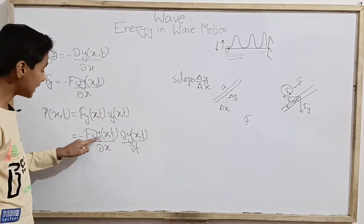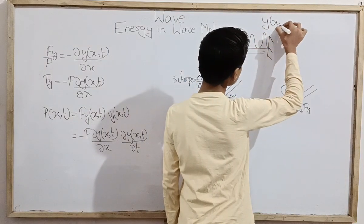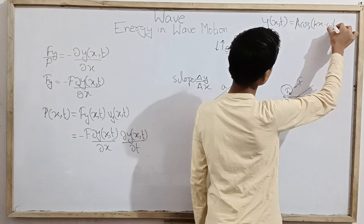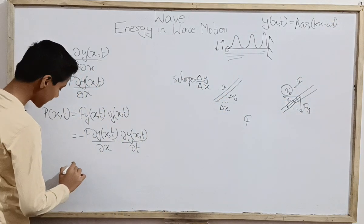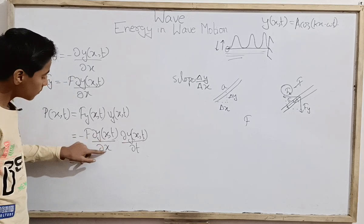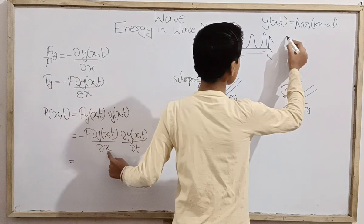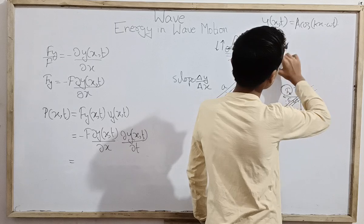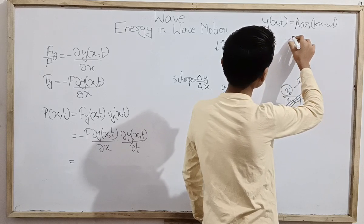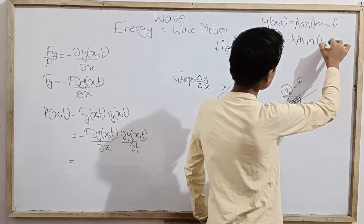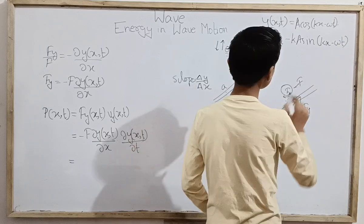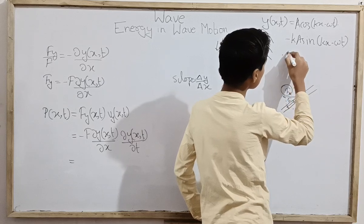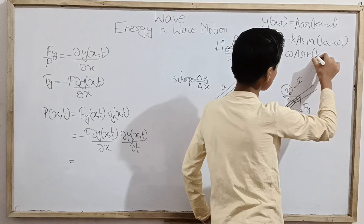We can further solve this using the wave function. The wave function, as seen in previous videos, is y(x,t) = A cos(kx − ωt), which is the most general form we usually use. Differentiating with respect to x, treating t as constant, we get dy/dx = −Ak sin(kx − ωt). Differentiating with respect to t, treating x as constant, the cosine becomes negative sine, and with the chain rule we get dy/dt = Aω sin(kx − ωt).